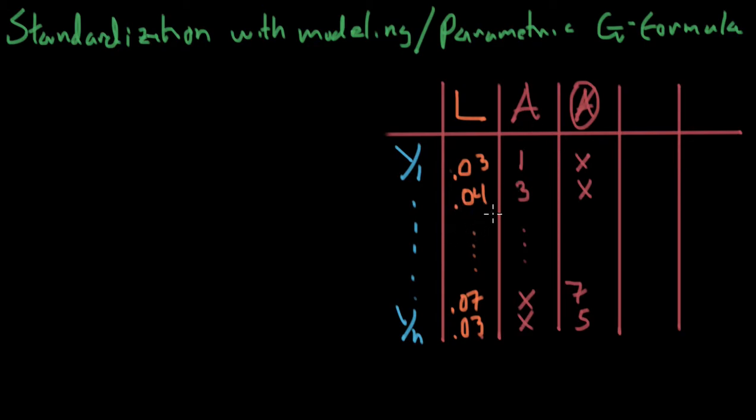So at this point, for example, we might only have one person that has an L value of 0.4 that has been treated. Okay, so let's dig right in and talk about how we'll solve this problem.